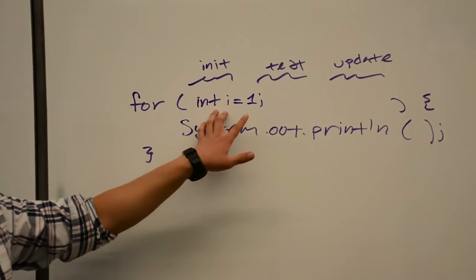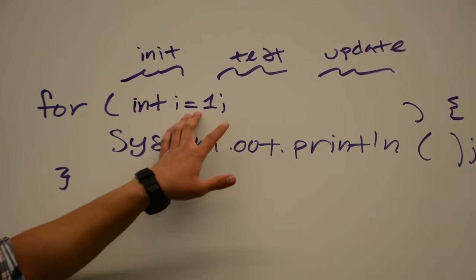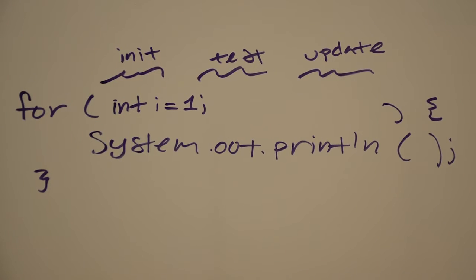I've initialized an int, for convention we usually call it i, and I set it equal to 1, and we're going to use this variable to help us control the for loop.